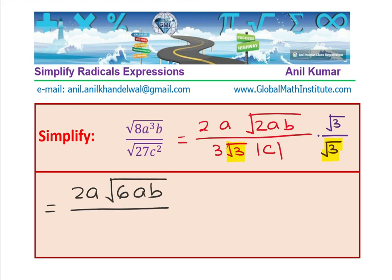And in the denominator, square root 3 square root 3 gets multiplied. So, we get 3 times 3 absolute value of c and this could be written as 2a square root of 6ab divided by 9 absolute value of c.